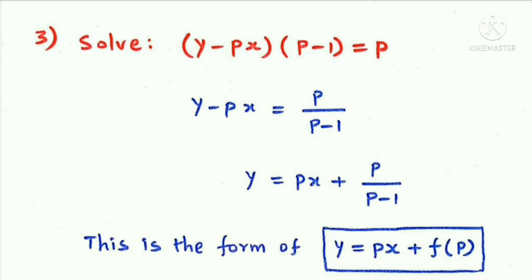Next question: solve (y - px)(p - 1) = p. Dividing both sides by (p - 1) gives y - px = p/(p-1). Therefore y = px + p/(p-1).